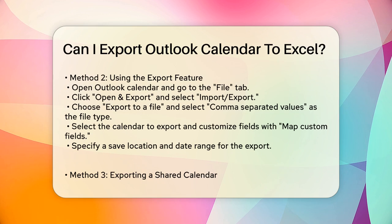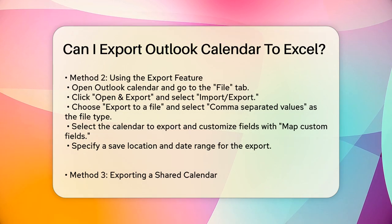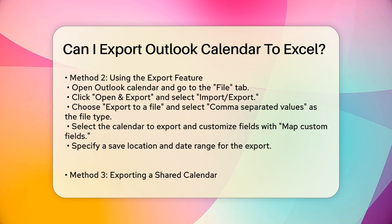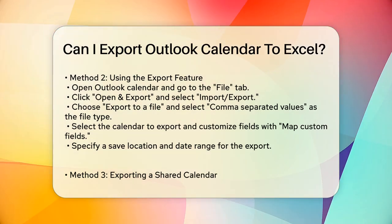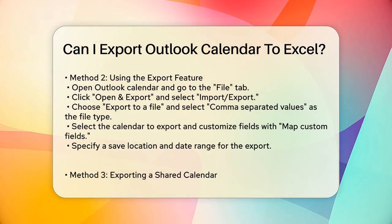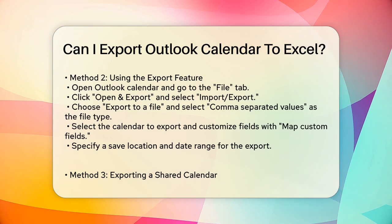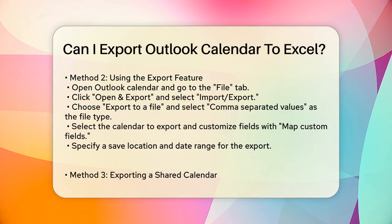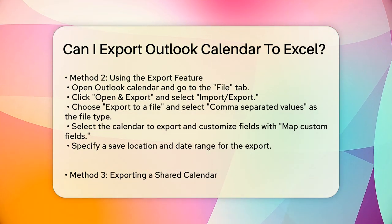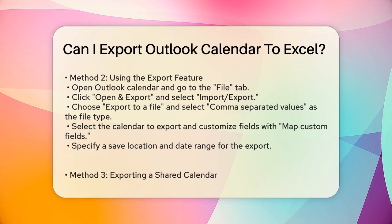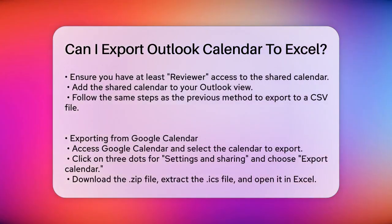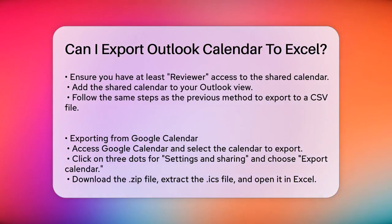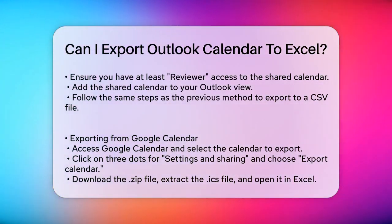Then select the calendar you want to export and click Next. You can customize the fields you want to export by clicking the Map Custom Fields button. Here you can add or remove fields as needed. Once you're done, click OK and then Finish. You'll need to specify a location to save the exported file and set a date range for the events you want to export. After setting the date range, click OK and the export process will complete.